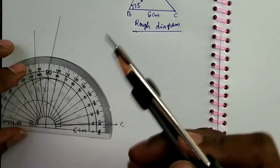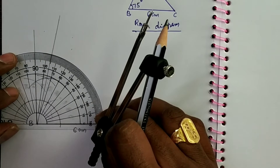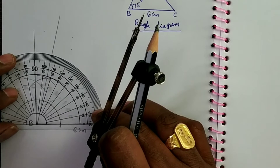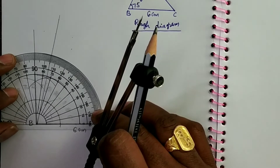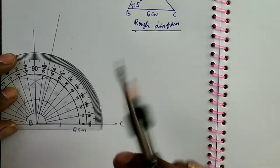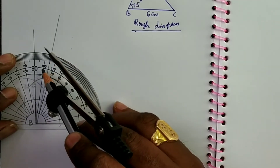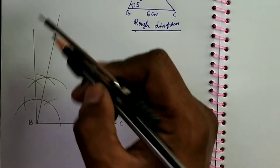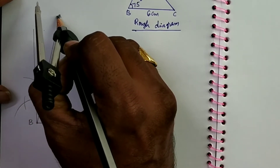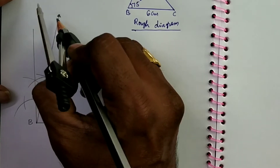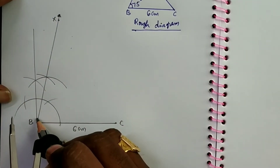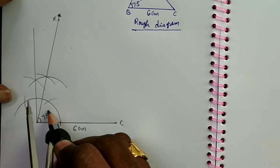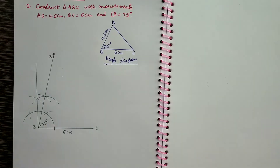You can check using a protractor — it is exactly between 70 and 80. This represents 75 degrees. Take this ray as BX. Ray BX makes an angle of 75 degrees with BC.